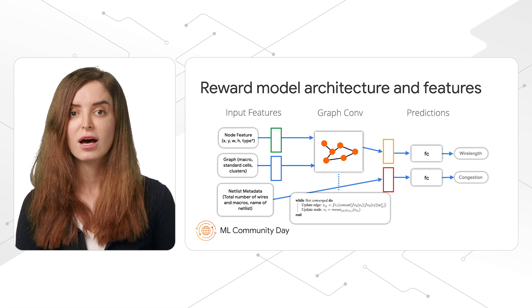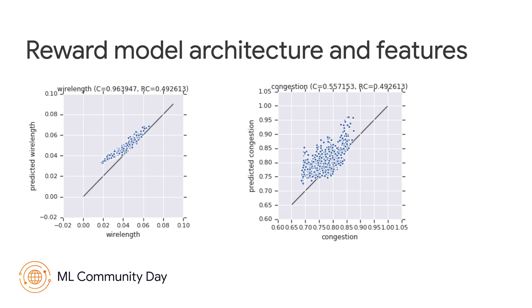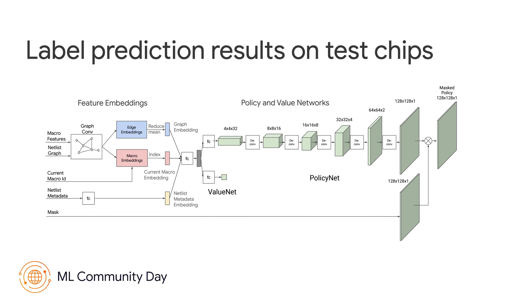This graph representation was eventually able to predict wire length and congestion well. Once we had this representation that was strong at predicting the reward function, we placed that architecture on the encoder side of the policy. On the decoder side, we used multiple layers of deconvolutions to predict the actions — in this case, where to place a new macro. We also used a mask function, which was very important for training: it allows the policy to only choose actions or placements that are feasible at that point. For example, if a macro would overlap with an existing macro, that action is masked out as infeasible.